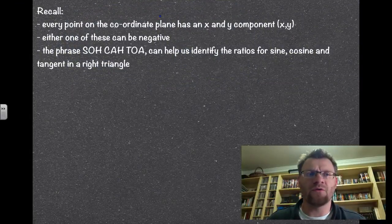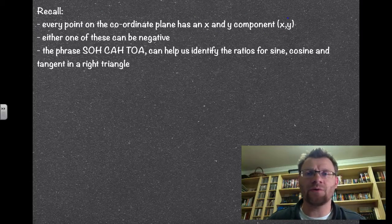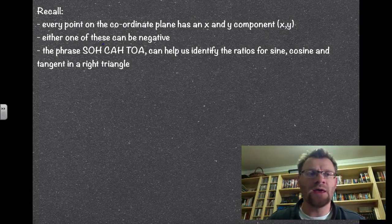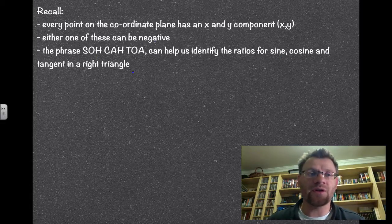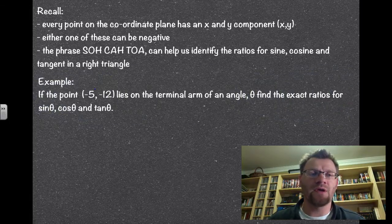Recall that every point on the coordinate plane has an x and a y component, and either one of these can be negative. And the phrase SOHCAHTOA can help us identify the ratios for sine, cosine, and tan in a right triangle.